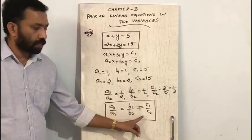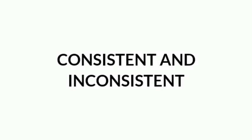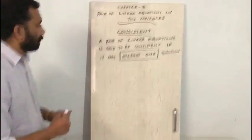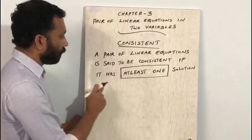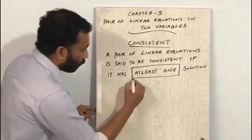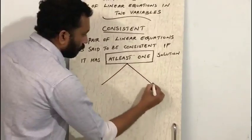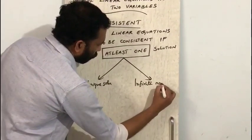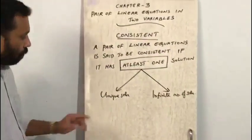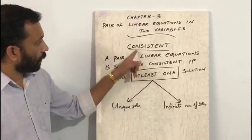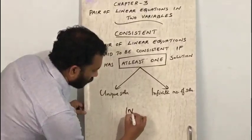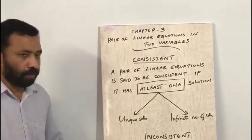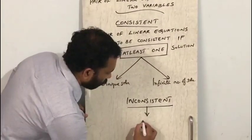Now let us discuss two important terms. A pair of linear equations is said to be consistent if it has at least one solution. 'At least one solution' includes both unique solution and infinite number of solutions — both belong to the category of consistent. A pair of linear equations is said to be inconsistent if it has no solution.